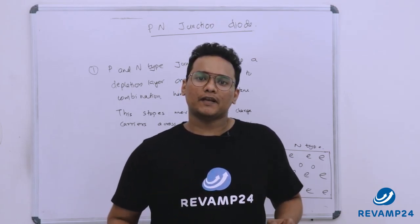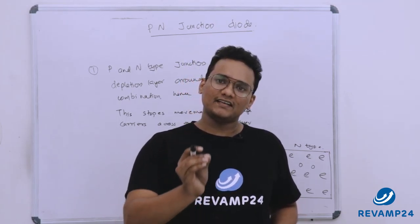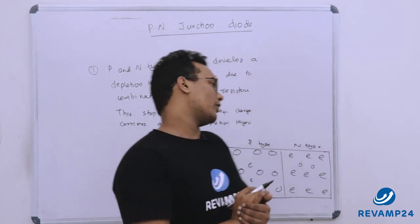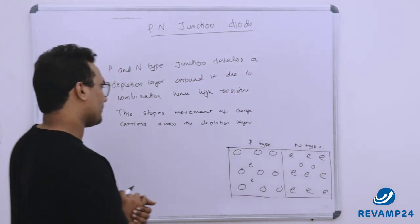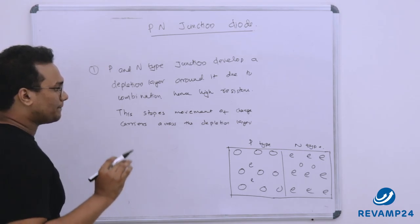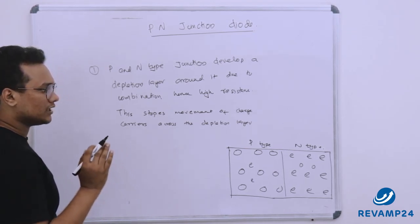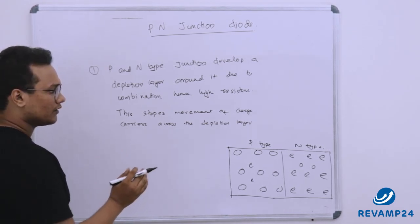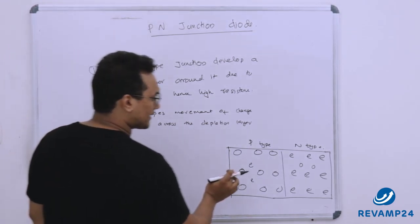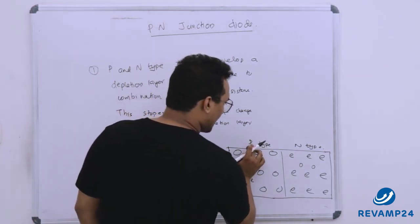In this video I will explain the PN junction diode. A PN junction diode is formed when we connect a P-type semiconductor with an N-type semiconductor.